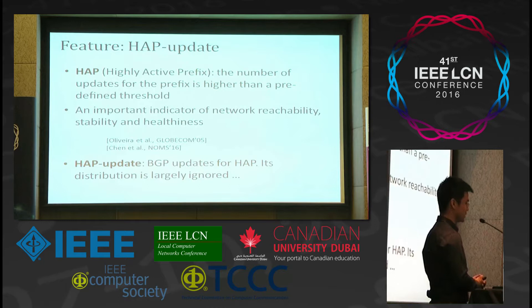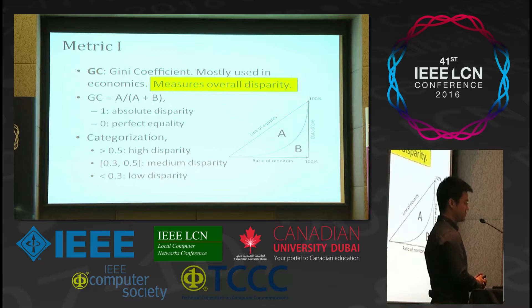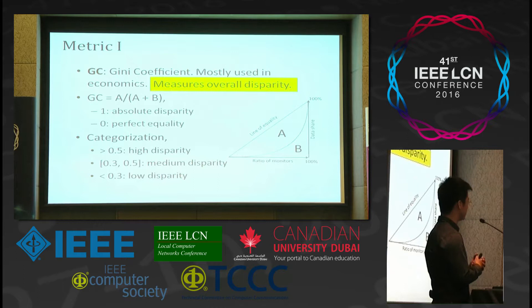Now I introduce the metrics. The first metric is the Gini coefficient, mostly used in economics to measure overall disparity. In the right figure, the x-axis is the ratio of monitors, the y-axis is the data share, and the curve is the cumulative distribution of the data share. The Gini coefficient is the area of A divided by the area of A and B. If it is 1, it is absolute disparity; if it is 0, it is perfect equality. The 45-degree line is the line of equality.